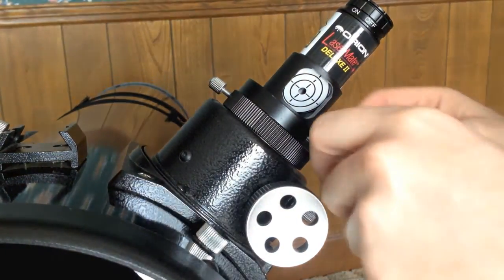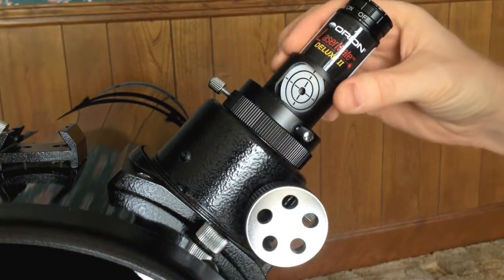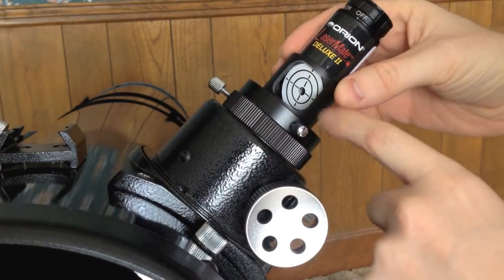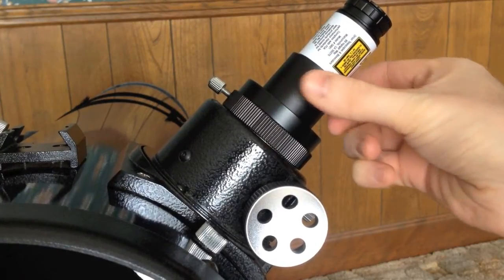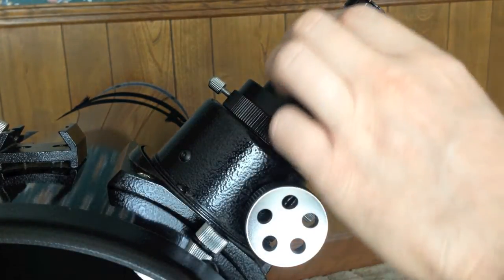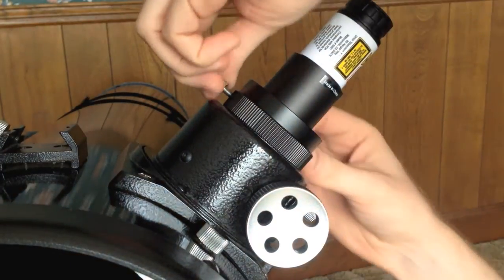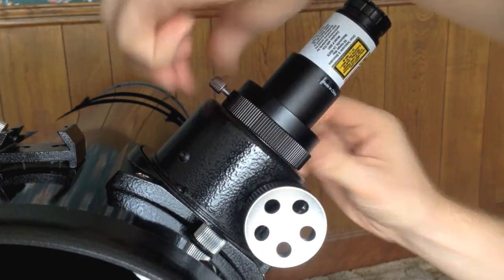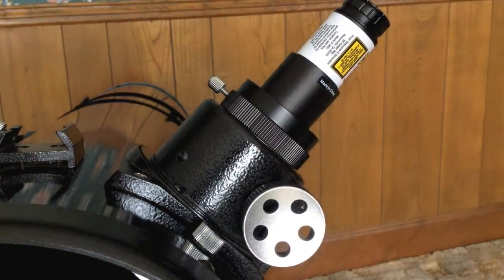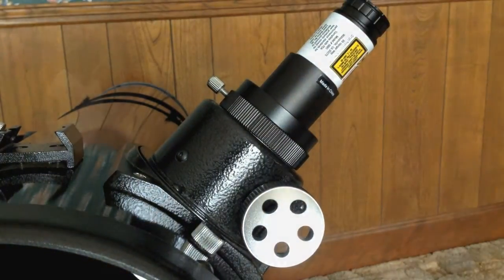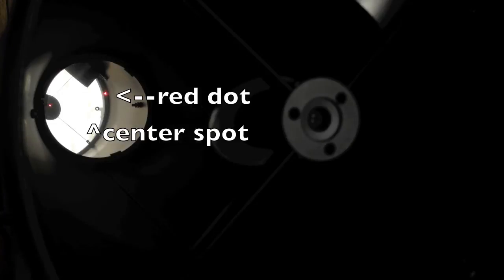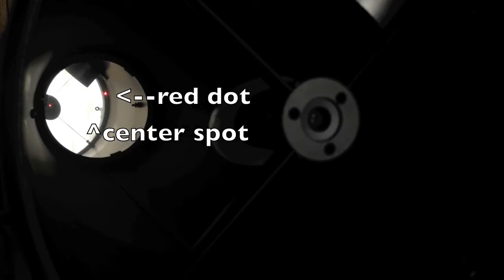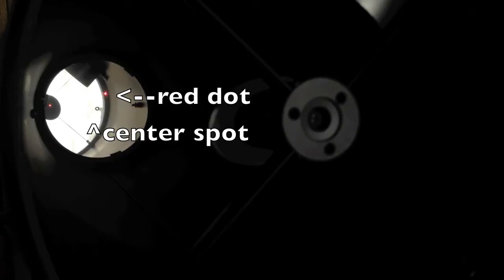So now it's in the focuser. I'm going to turn this around so it's facing the primary mirror, because when you collimate the primary you need to look up towards this grid. Tighten everything down and turn on the collimator. Now, I've intentionally thrown this out of collimation.